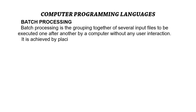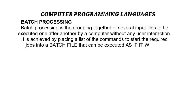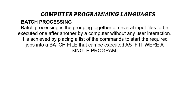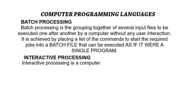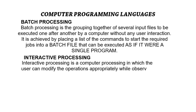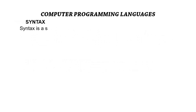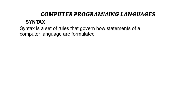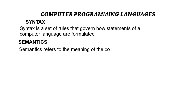Batch processing is achieved by placing a list of commands to start the required jobs into a batch file that can be executed as if it were a single program. Interactive processing is computer processing in which the user can modify the operation appropriately while observing results at critical steps. Syntax is a set of rules that covers how statements of a computer language are formulated.